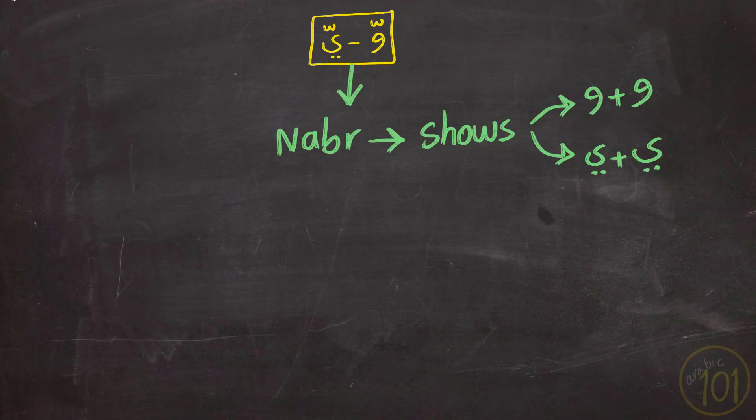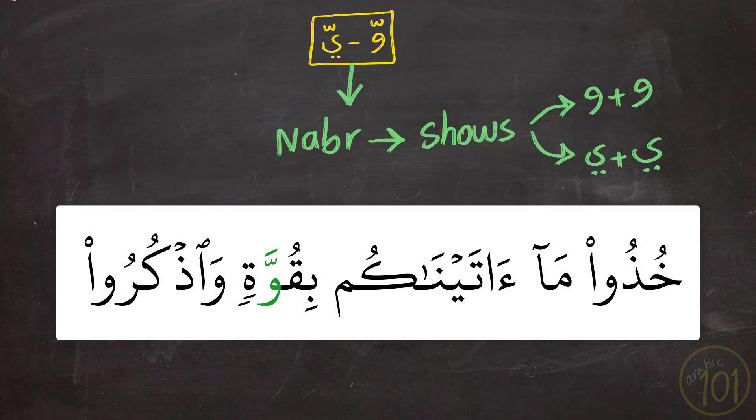Another example that involves the Wao: خُذُوا مَا آتَيْنَاكُم بِقُوَّةٍ وَاذْكُرُوا. Notice I said بِقُوَّة not بِقُوَّة. So خُذُوا مَا آتَيْنَاكُم بِقُوَّةٍ is not correct. You have to show the stress on the Wao by showing that there are two Waos in this case. خُذُوا مَا آتَيْنَاكُم بِقُوَّةٍ.